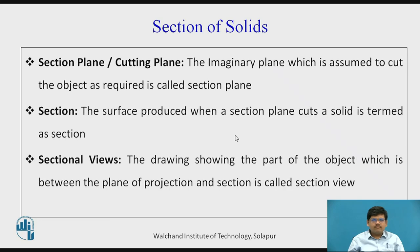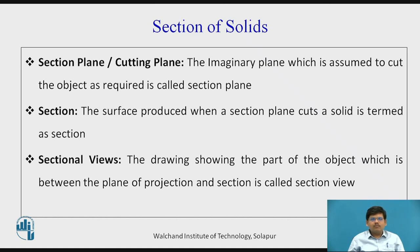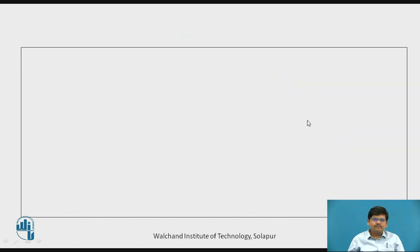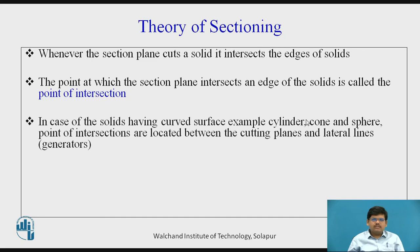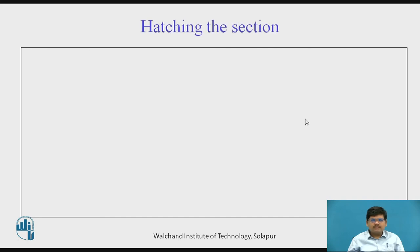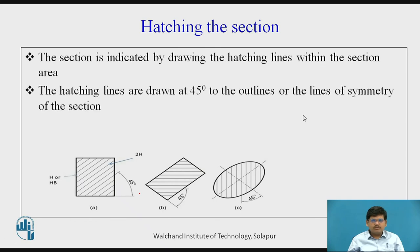Some parameters to know: a section plane or cutting plane is an imaginary plane assumed to cut the object as required. A section is the surface produced when a section plane cuts a solid. A sectional view is when you draw the views of the cut portion. Hatching needs to be shown in sectional views — lines are exactly at 45 degrees to the boundary lines and equally spaced. Thank you.